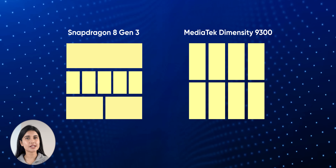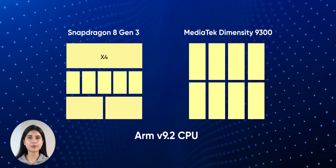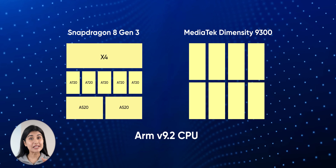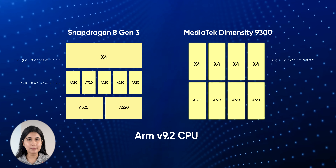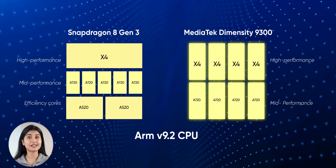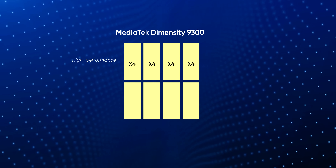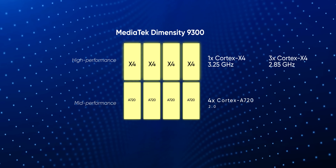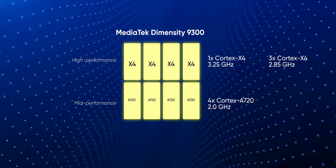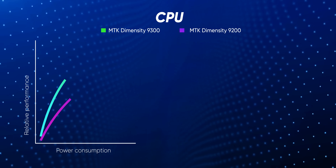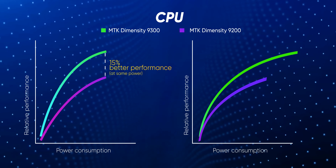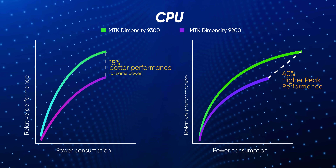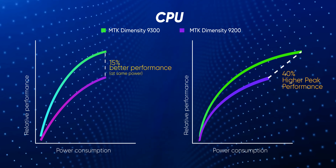Then there's the Dimensity 9300. Like the 8 Gen 3, it also uses ARM version 9.2 base design, but what's insane about it is that MediaTek has used an all-big-core CPU design here, which is something we have not seen on an ARM chip ever. MediaTek has completely ignored the efficiency-focused A520 cores in favor of 4 Cortex-X4 and 4 Cortex-A720 cores, which managed 15% better performance at the same power versus last year's Dimensity 9200, or even hit a 40% higher peak performance.